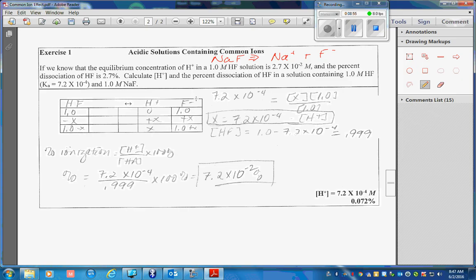Here are our equilibrium expressions. We were given the Ka for hydrofluoric acid and when I do my math, I see that the x value on my H plus value is this. That's my hydrogen ion value. And I started out with one molar HF and from that I take away x and I'm left with 0.999 molar HF.